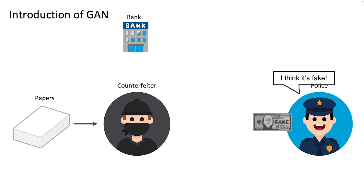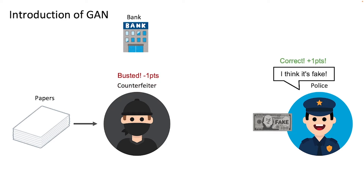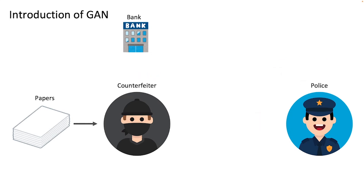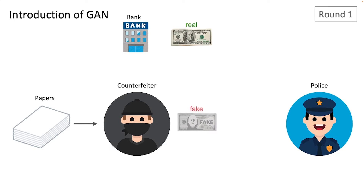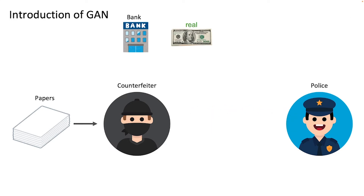However, if the police correctly marks the target as fake currency, the counterfeiter is busted and the scoring works the other way around. Based on these results, the counterfeiter adjusts his printing techniques and the police officer sharpens his sensitivity to the telltale traces of fake currency. The players then start a new round with better counterfeiting and detection skills.